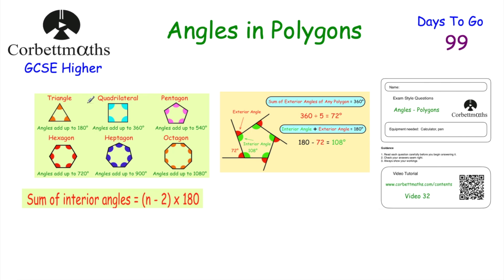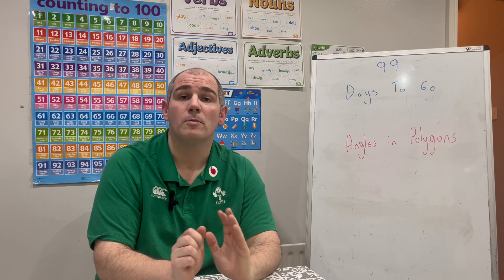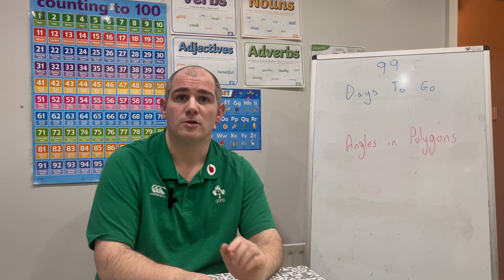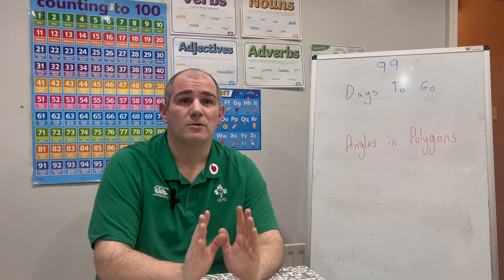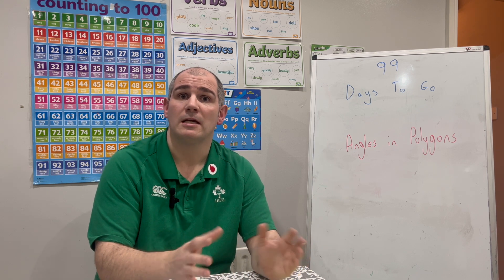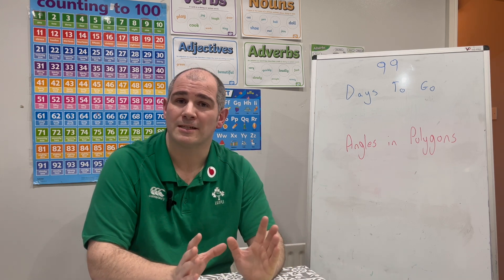So in this video we've gone through angles and polygons — what the angles in polygons add up to (180 degrees for triangles, and so on), the formula n minus 2 times 180 for the sum of interior angles, and the useful fact that all exterior angles always add up to 360 degrees. Remember for regular polygons, all interior angles are the same size and all exterior angles are the same size.